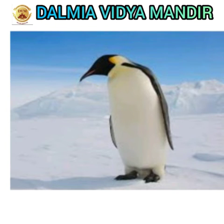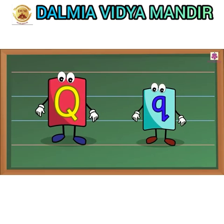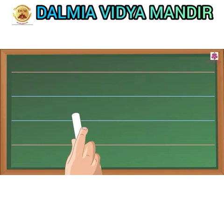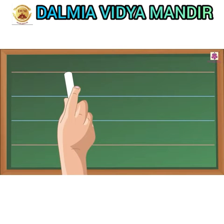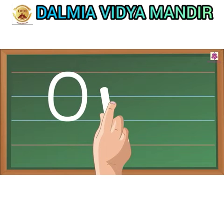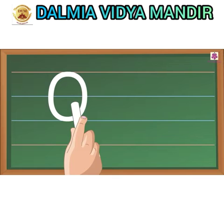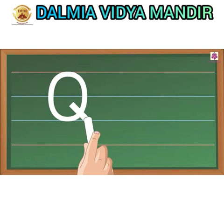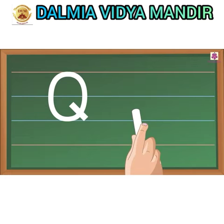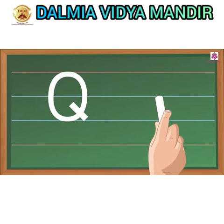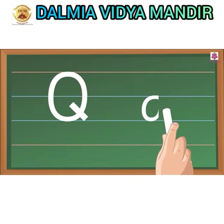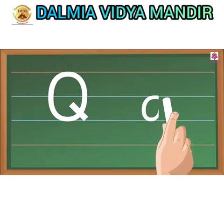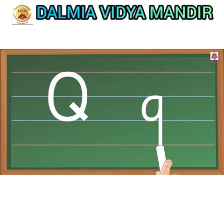Q. Capital Q — start from the top and make the capital letter O, then from inside the O, make a slanting line to the right reaching the bottom. Small Q — start from the middle and make a small C, then go to the middle again and make a standing line to reach below the bottom and make a hook tail.